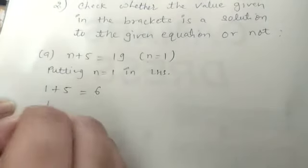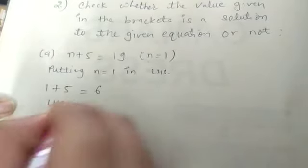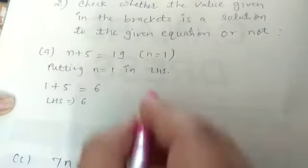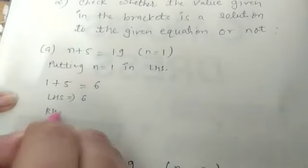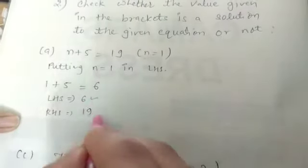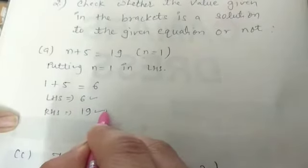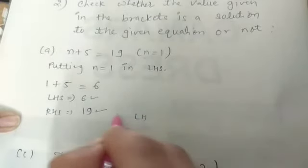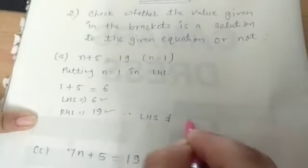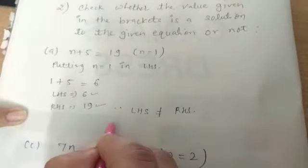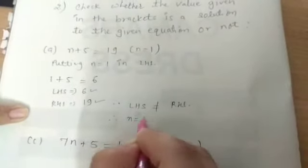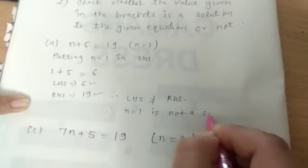And it is LHS of the equation. It's 6. And see, the RHS is 19. So, LHS and RHS both are not equal. So, we will write LHS not equal to RHS. It means n equal to 1 is not a solution.